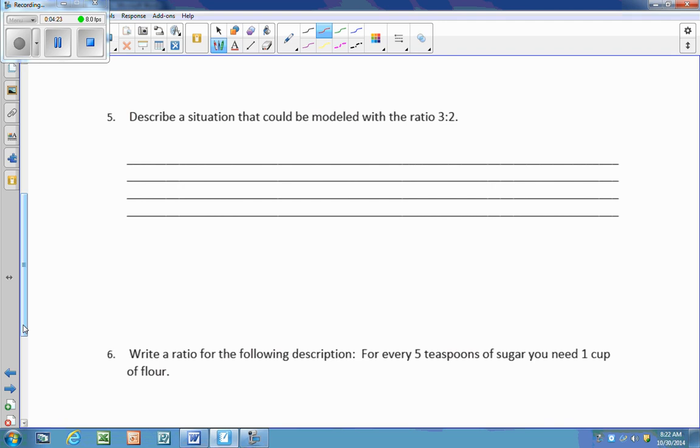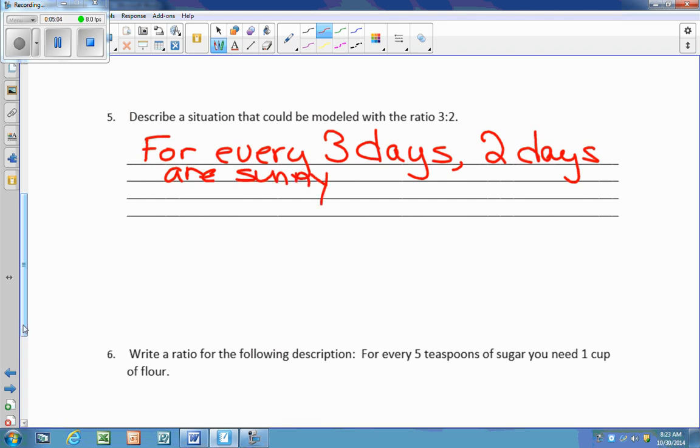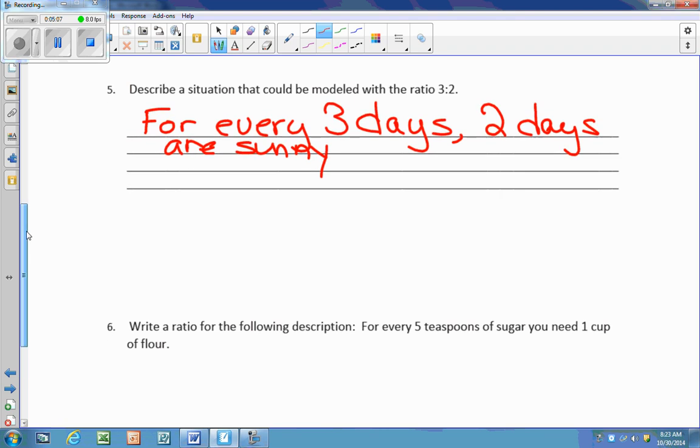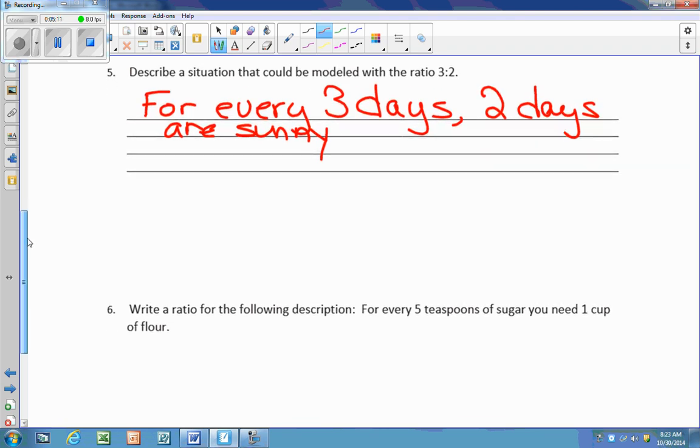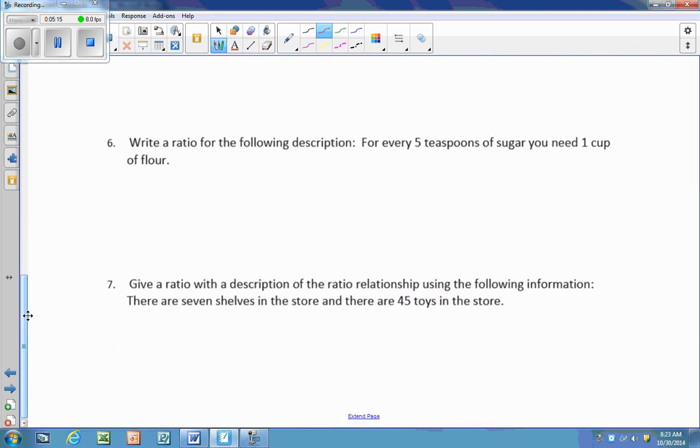Now number five, describe a situation that could be modeled with the ratio three to two. You're going to describe any ratio that has for every three of something, there is two of something else. So you might say, you can use food, you can use anything in real life situations would really work. So for every three days, two days are sunny. Okay. So I'm giving an example, a real life example. I can't say there are three days and two rainy. You're going to say for every three days, there are two days that are sunny. It's giving me the ratio relationship.